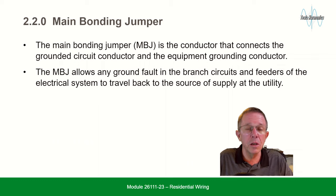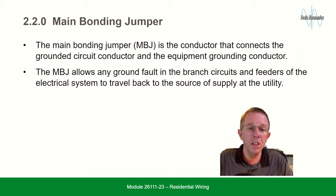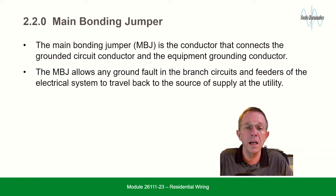Main bonding jumper: the main bonding jumper, or MBJ, is the conductor that connects the grounded circuit conductor and the equipment grounding conductor. The MBJ allows any ground fault in the branch circuits and feeders of the electrical system to travel back to the source of supply at the utility.